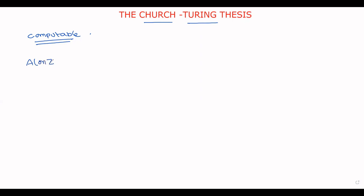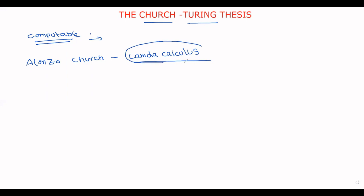...Alan Church implemented a model called lambda calculus. He said that anything that is calculated by using lambda calculus is called computable. Anything that is either a string or a language and mathematical calculation, if it is calculated by using this lambda calculus, that thing is called computable.